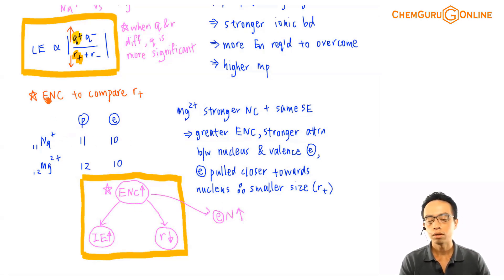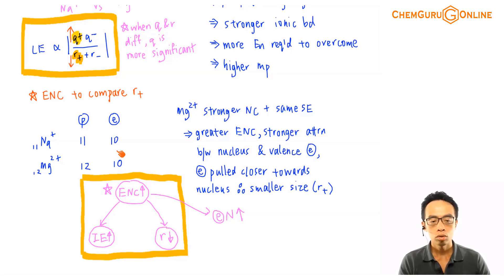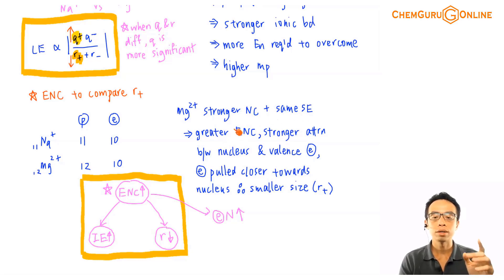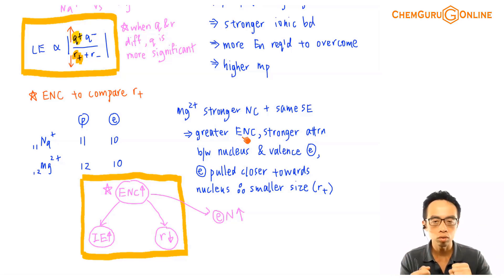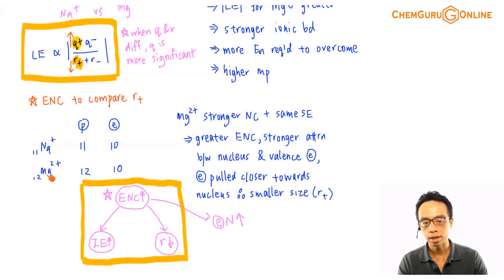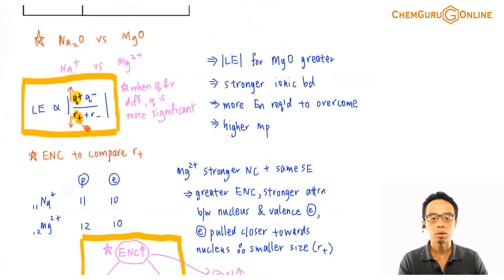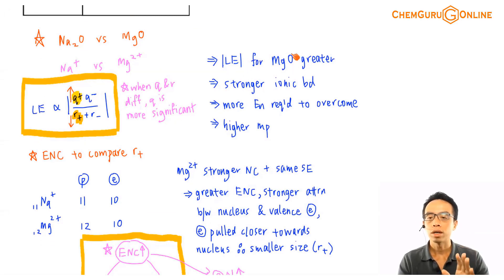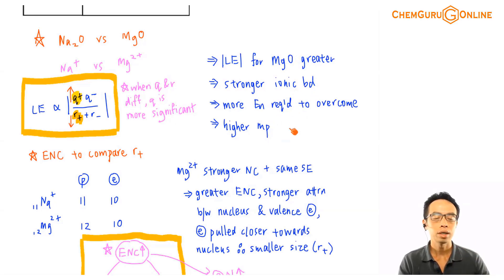Comparing the effective nuclear charge for Na⁺ and Mg²⁺: the proton number for Mg²⁺ is higher, the number of electrons is exactly the same, so the shielding effect is the same. More protons means greater nuclear charge with the same shielding, so ENC for Mg²⁺ is greater. Stronger attraction means the electrons are pulled closer, so Mg²⁺ has a smaller size. Therefore the magnitude of the lattice energy for MgO is greater, the ionic bonds are stronger, and the melting point is higher.